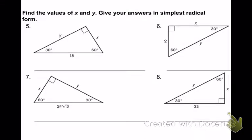Number 5: find x and y in simplest radical form. I'm given the hypotenuse of 18. Find the short side first — half of 18 is 9. Then multiply by square root of 3 to get 9 square root of 3.